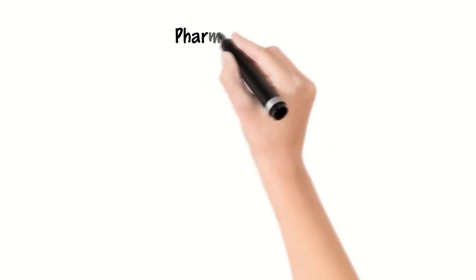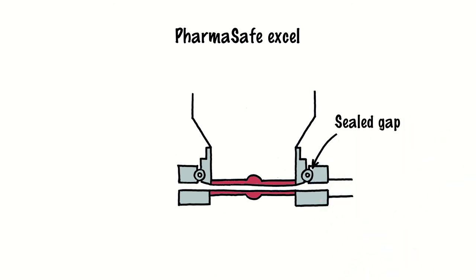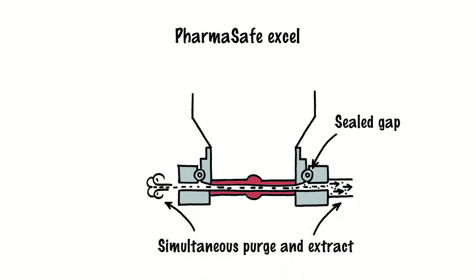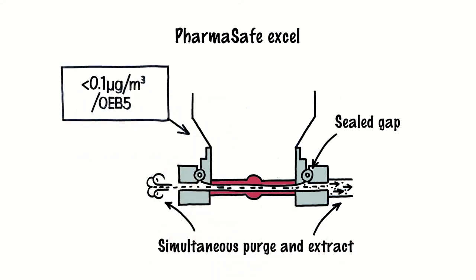The most advanced system PharmaSafe XL incorporates an intermediate sealed docking position with the two discs slightly separated. A high-velocity purge and extraction sequence is run to remove traces of dust particulate that could become airborne once the valve is undocked. This performs to nanogram levels below 0.1 microgram per meter cubed.